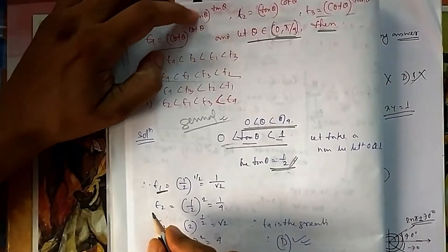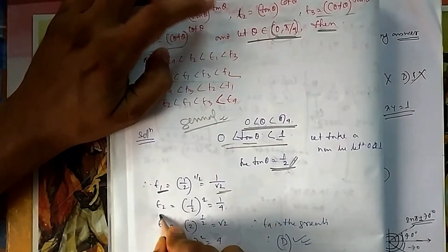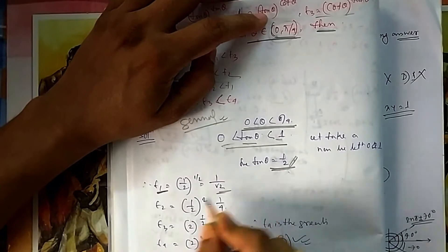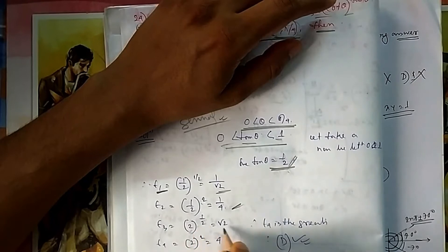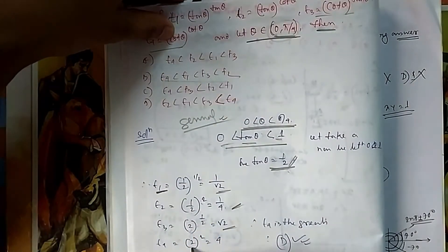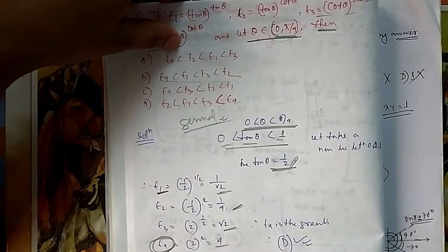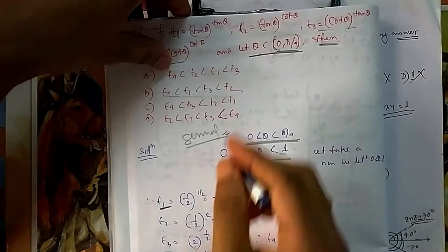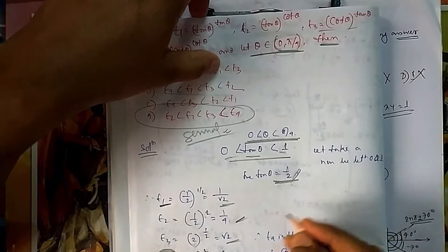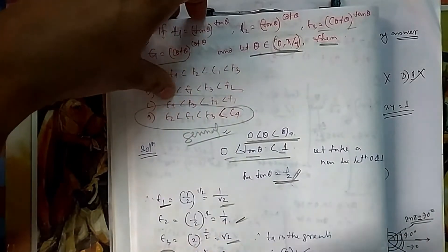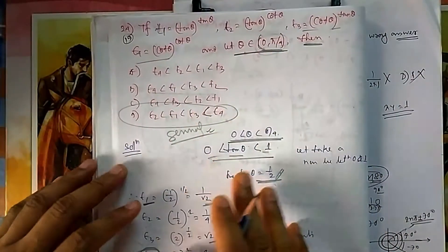With tan theta equal to one-half: t1 = tan theta to the power tan theta = (1/2)^(1/2) = 1/√2. For t2, it's (1/2)^4 times related terms. Computing all values, you can see t4 is the greatest. So there is only one option with t4 as the greatest, which confirms option D is the correct answer.